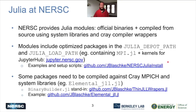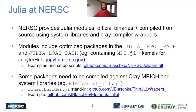At NERSC we are providing Julia modules that consist of the official Julia binaries as well as compiled versions built from source using the system libraries and the Cray compiler wrappers. The modules also include optimized packages such as MPI.jl and the JupyterHub kernels, and these are tied into the Julia Depot path and the Julia load path environment variables. If you want to see how this works, you can have a look at our setup scripts and some example instructions at this GitHub URL.